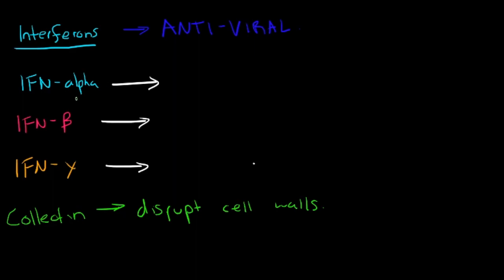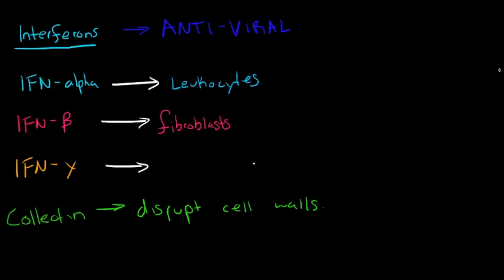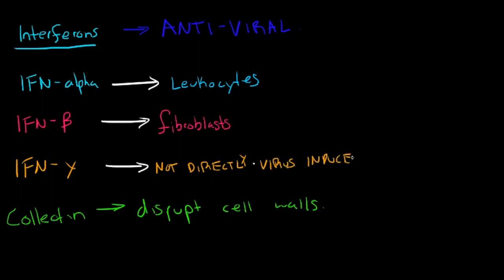Interferons are divided into three major types: interferon alpha, which is produced by leukocytes; interferon beta, which is produced primarily by fibroblasts; and interferon gamma, which is not directly induced by viruses but is produced by T-cells and natural killer cells.